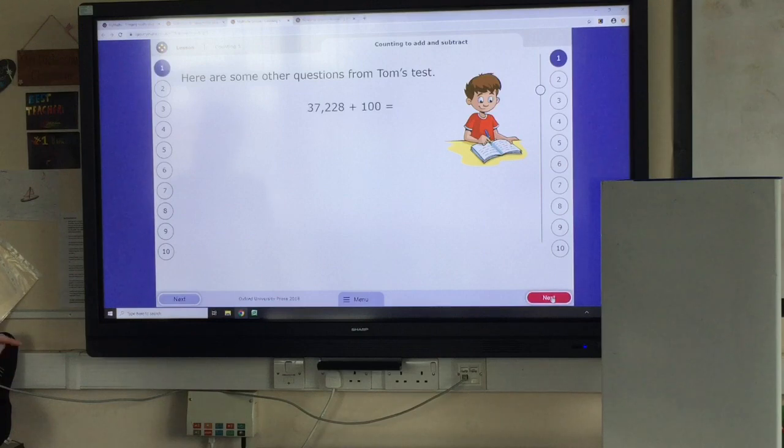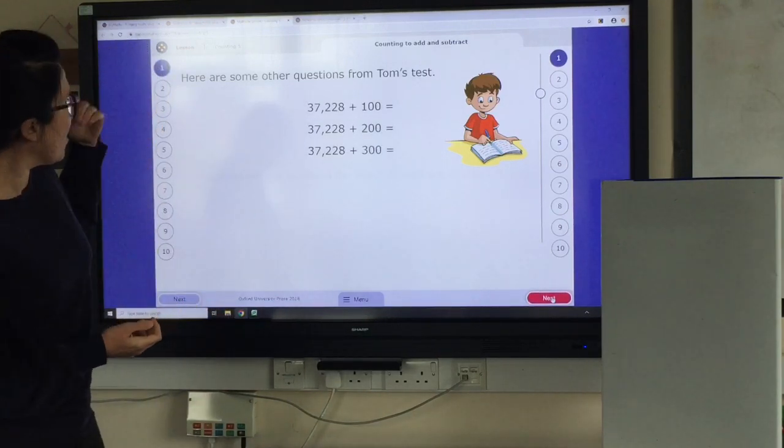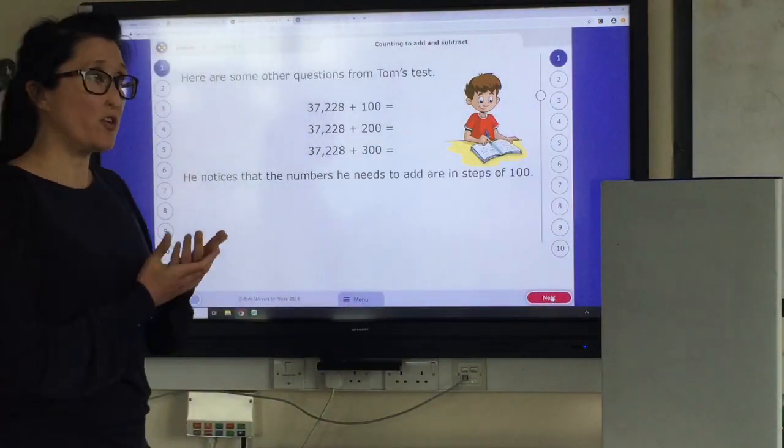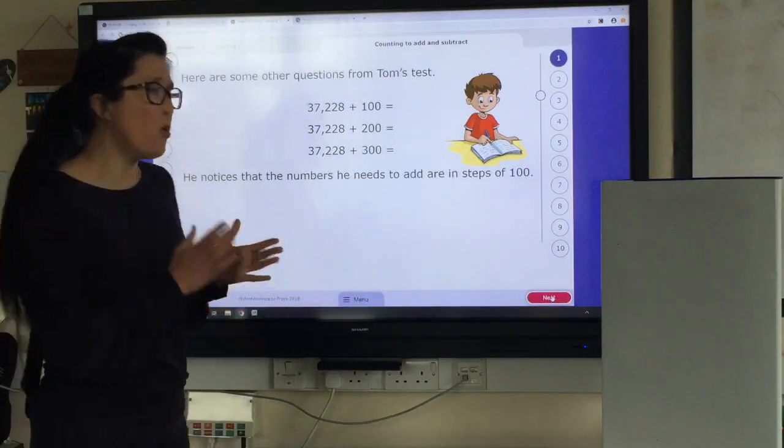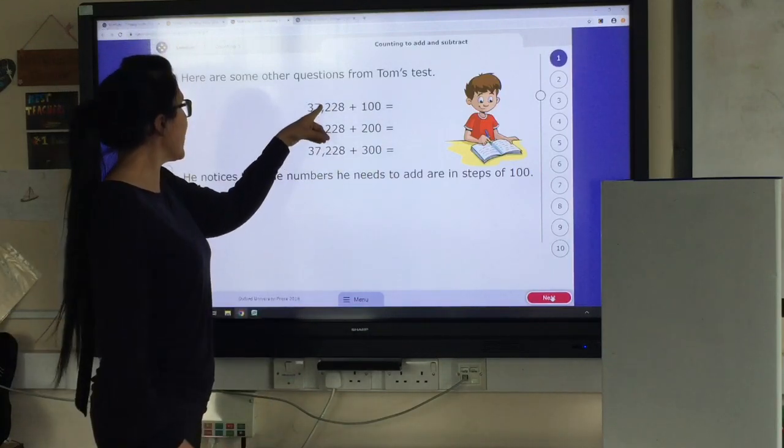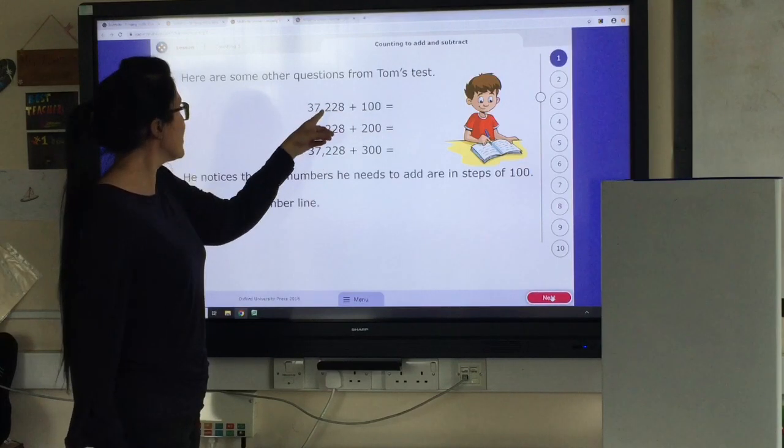Here are some other questions from Tom's test. So you'll notice here that, we're not using 10's this time, we're using 100's. But going back to your place value knowledge, you know where that 100's column is. So you know that currently here, we've got a 2 in the 100's column. So if you wanted to add on 100, it's going to go up by 1, that place value column.